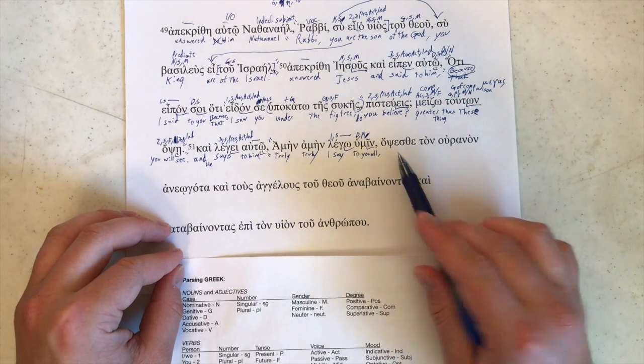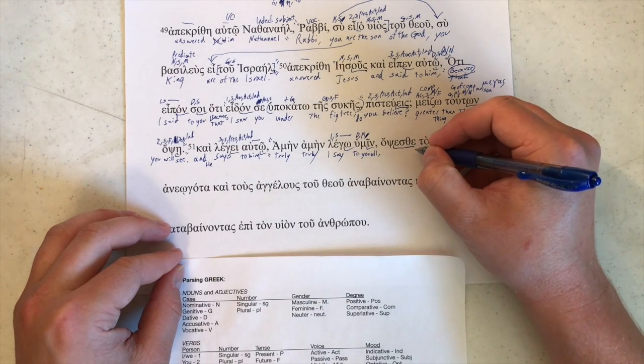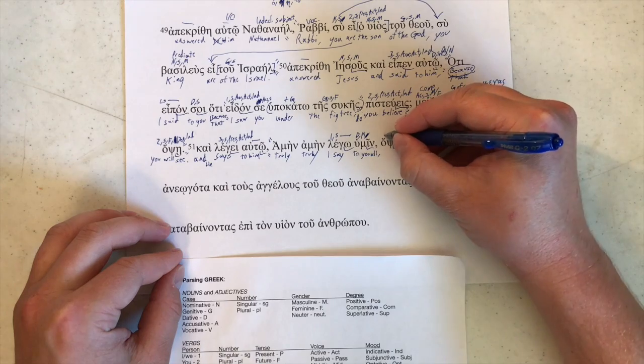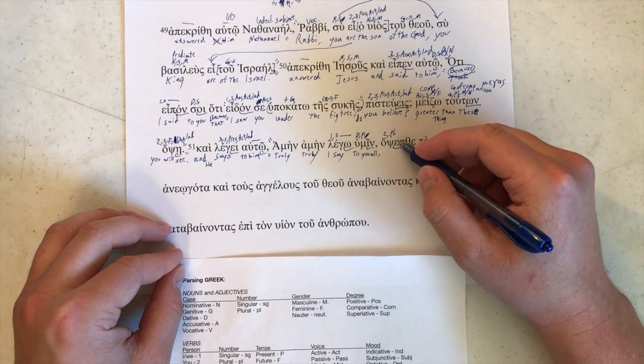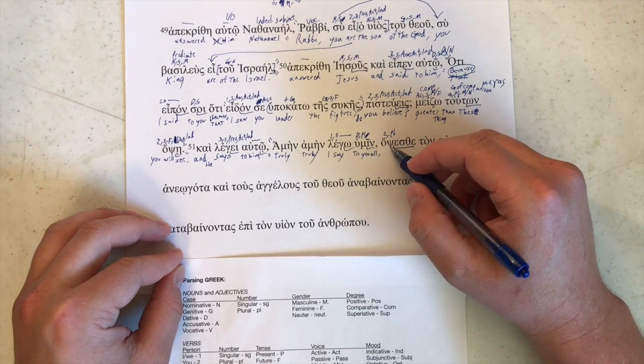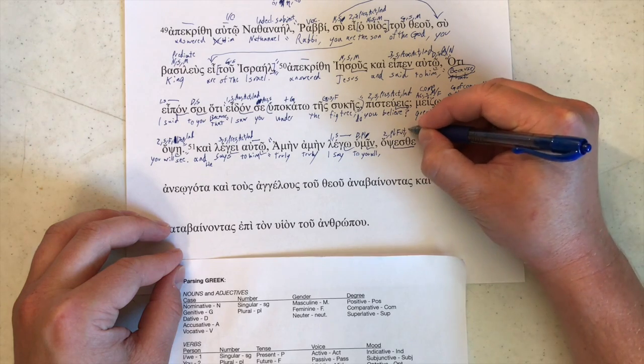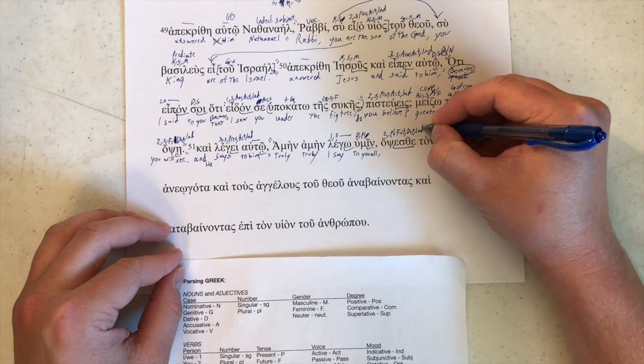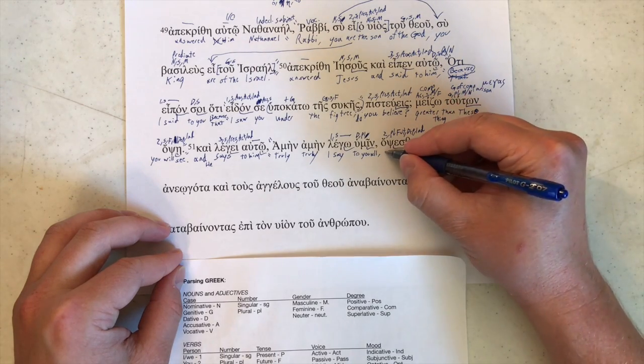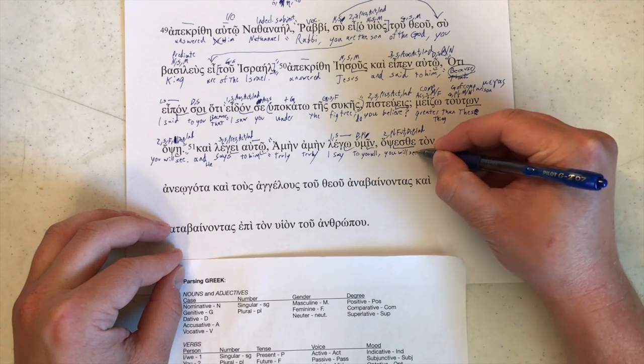And then we have opsesthe. Epsilon, sigma, theta, epsilon here is going to be second person plural to match that. Horaō, opsomai, so ops is our stem, so that's going to make it future. And deponent, indicative. You will see.